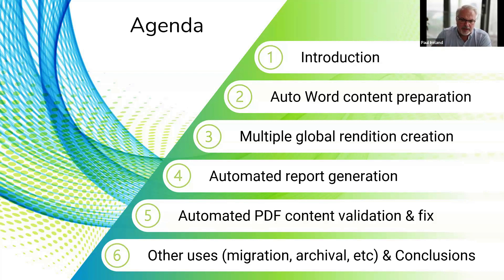We'll look at how you can automate the creation of multiple global PDF renditions — not only viewable renditions as you'd get with the Viva viewable rendition, but actually fully compliant PDF renditions. We'll look at how you could automatically generate reports that may feed into submissions, or completely separate corporate reports, created without any human interaction whatsoever. And we'll look at how you can analyze your PDF content and identify any specification or PDF-related issues, and automatically fix them potentially.